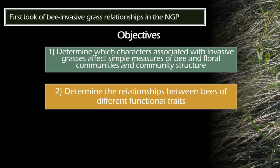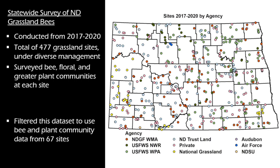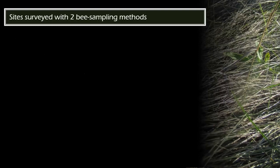For methods, this data comes from a statewide survey of bees, plants, and greater plant communities across North Dakota, conducted between 2017 and 2020. There were a total of 477 grassland sites surveyed, managed by many different agencies, with about 120 private sites and a couple of NGOs. For this particular study, I filtered the dataset to 67 sites because I limited it to sites that received two different bee sampling methods, since insect communities are super hard to measure and using different methods gives a better representation of the bee community.